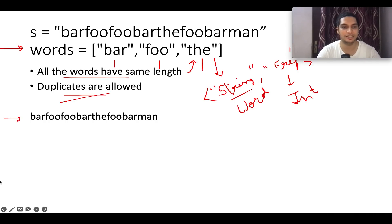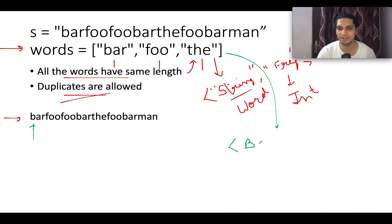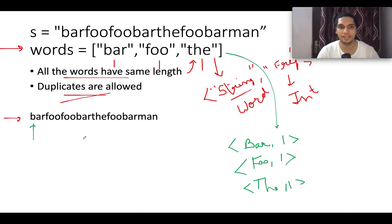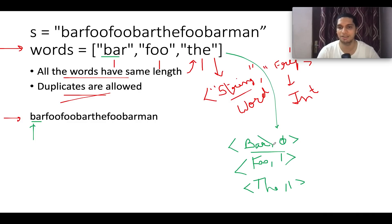Now I'll start iterating over the input string. At index 0, the first thing I do is create a copy of the entire frequency map. I then create a substring of length 3 — because words are of length 3. The first word extracted is 'bar'. I check whether 'bar' is part of the map — yes, it is, with frequency 1. So I reduce the frequency to zero and remove it from the copy map since we've successfully identified this word.